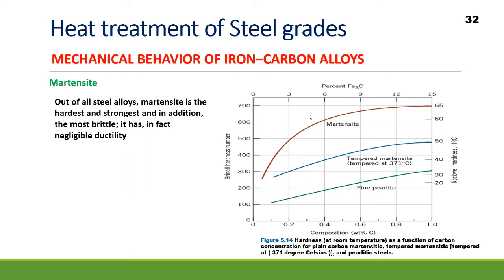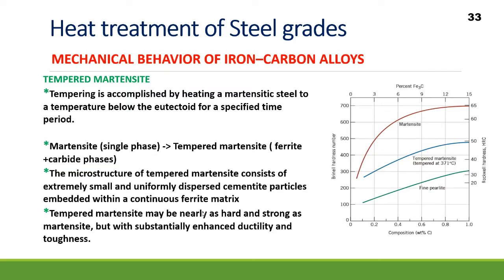Next we move to martensite. Out of all steel alloys, martensite is the hardest and strongest, but also the most brittle with very negligible ductility. When Brinell hardness number is plotted against carbon composition, martensite shows the highest hardness — around 65 HRC — while fine pearlite is the least hard or strong when comparing martensite, tempered martensite, and fine pearlite.